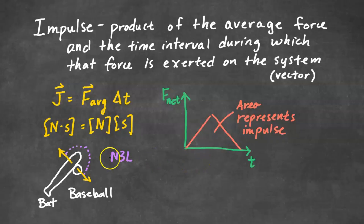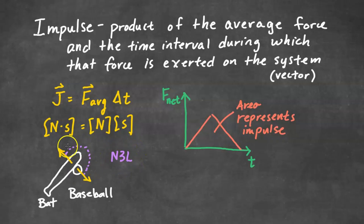Let's take a look at an example. Here's a bat that hits a baseball. The bat exerts a force on the baseball, and the force on the baseball times the time interval that the bat is pushing on the baseball is equal to the impulse. Because of Newton's third law, there's also a reaction force that is equal but in the opposite direction, and the time interval will be the same. That means there's going to be an impulse on the bat that is equal to the impulse on the baseball, except they're in opposite directions.